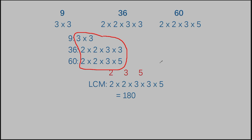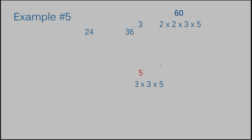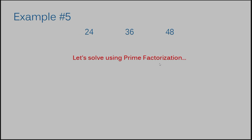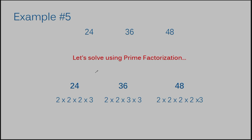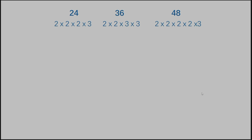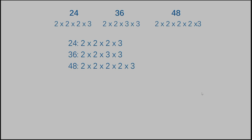Let's do another example. Example number five: we have 24, 36, and 48. Again we're going to solve using prime factorization. After finding the prime factorizations, the numbers break down like this. I'm going to stack them on top of each other — 24, 36, and 48 — with their prime factorizations to the right.